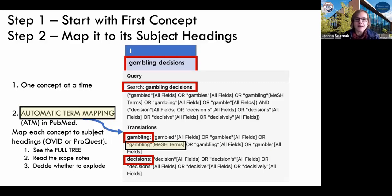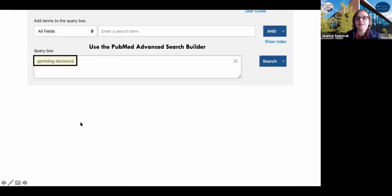What we see here on the gray background is the result of the automatic term mapping that PubMed will do for us. You see that gambling decisions got translated. You see that bolded translations term. It got translated into everything about gambling, including the boxed gambling MeSH term. Then it got translated into decisions. Gambling and decisions got split up as two terms that happened somewhere within the record. That gives a lot of records, but a lot of them will not have anything to do with gambling and decisions as concepts related to each other. I went to the PubMed advanced search builder and typed into the query box gambling decisions.